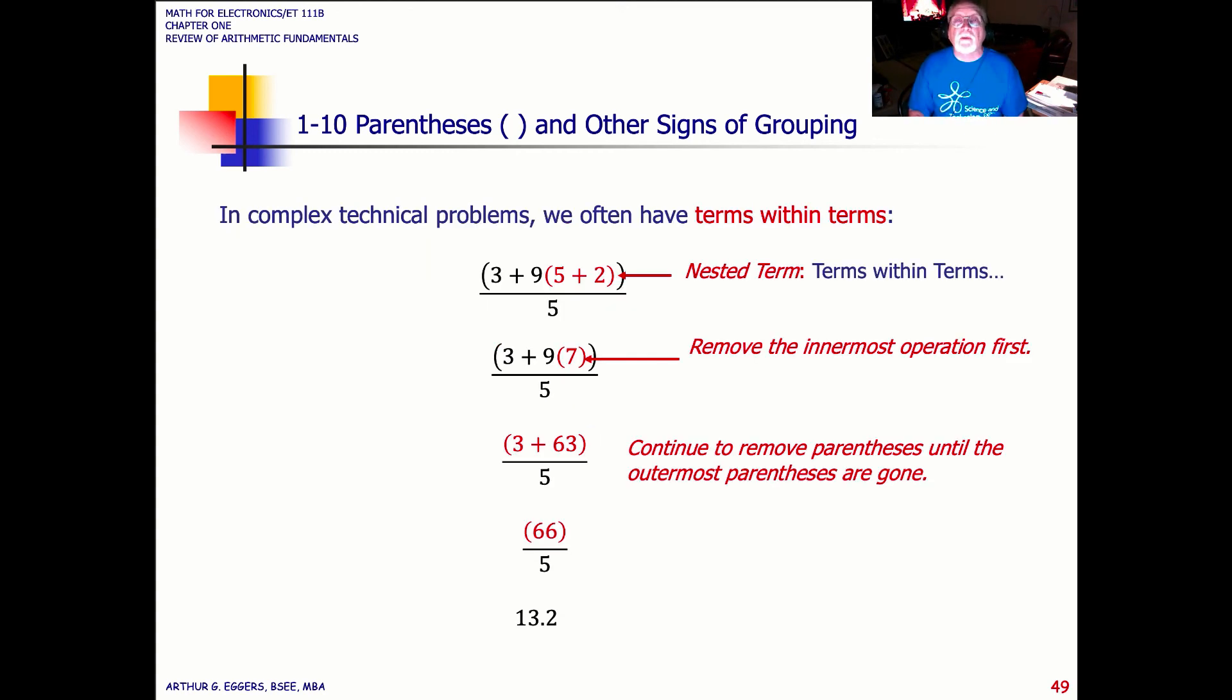In complex technical problems, we often have terms within terms. In programming, we call this nesting. So we've got nested here a five plus three in parents nested inside of the three plus nine times that value. So we reduce the problem down. I always recommend using this fashion, using a vertical rather than a horizontal scheme, going step by step by step down the page as you are solving your problems. So in each step, five plus two is reduced to seven. Nine times seven is reduced to 63. 63 plus three is reduced to 66. Divide that by five, and you end up with your quotient of 13.2.